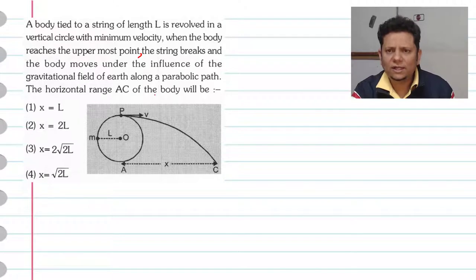The horizontal range AC of the body will be - now here we have U minimum, which is the minimum velocity such that the particle reaches the highest point.